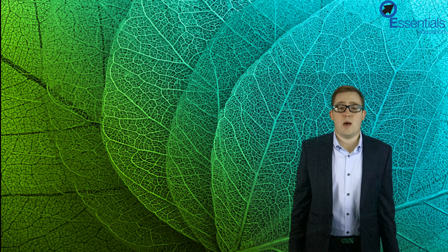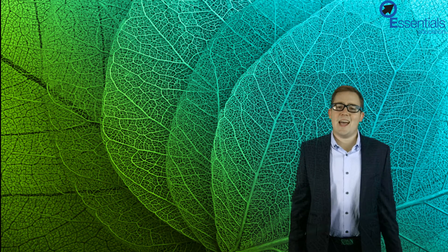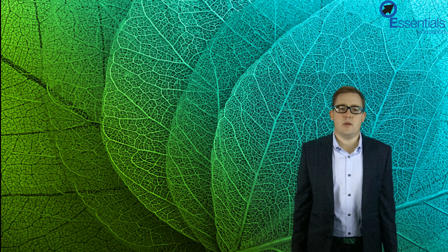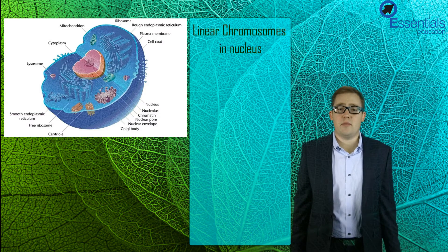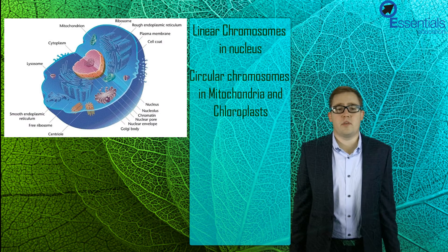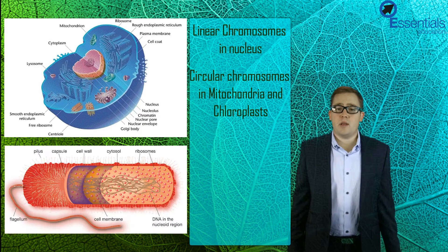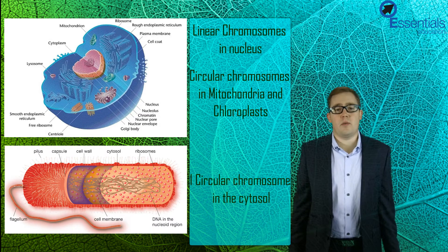Humans, for example, have 46 chromosomes in their somatic body cells. Chromosomes can be arranged in different ways and found in different locations depending on the type of cell. Eukaryotic cells like plant and animal cells contain linear chromosomes in their nucleus and circular chromosomes in their mitochondria and chloroplasts. Prokaryotic cells like bacteria, on the other hand, contain only one circular chromosome which is located in their cytosol.